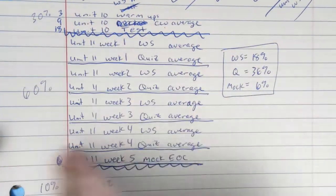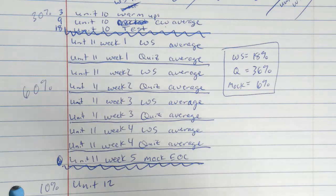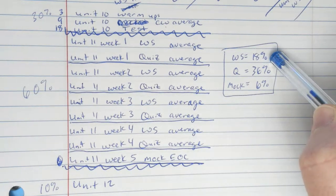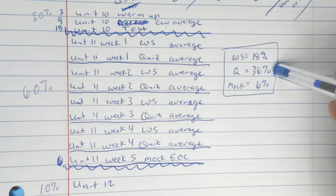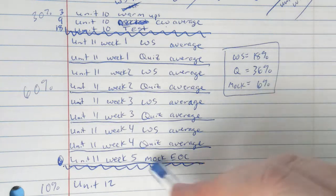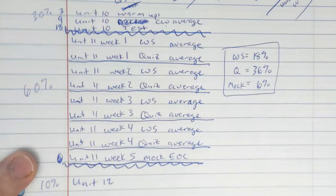Then 60% of your grade is going to be unit 11, which is this big thing we will be working on for the next five weeks. So 18% of your overall grade will be from the worksheets, which everyone should get 100% on. Quizzes will be 36% of your grade and participating in the mock EOCs during week five will be 6% of your overall grade. So just participating and learning from that will be that.